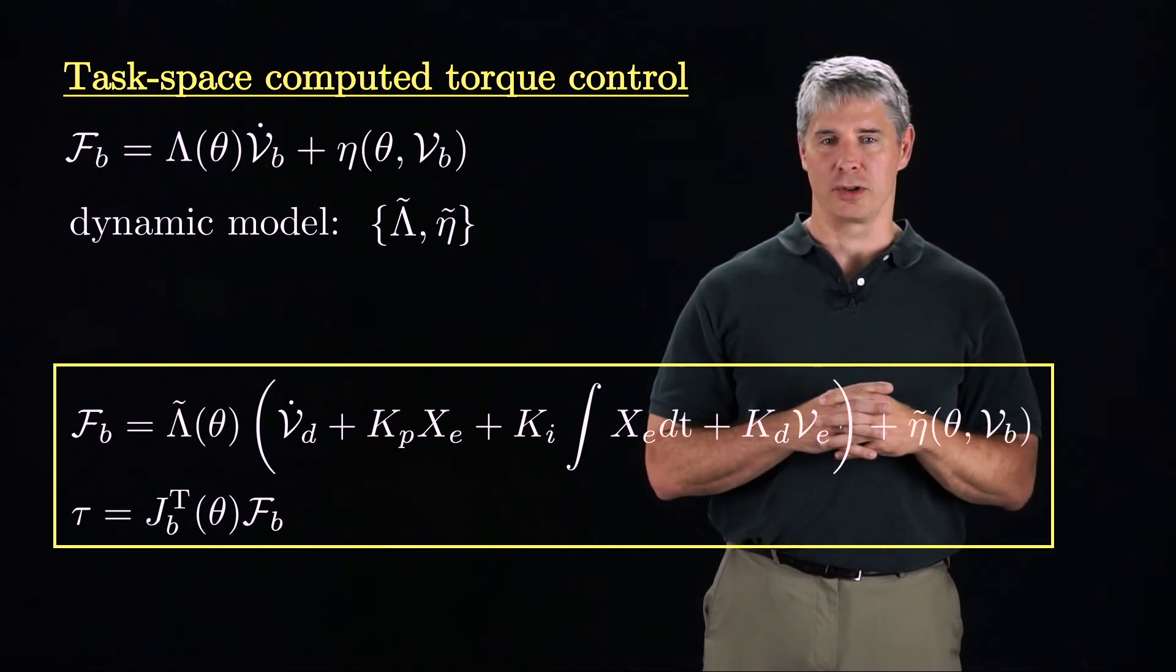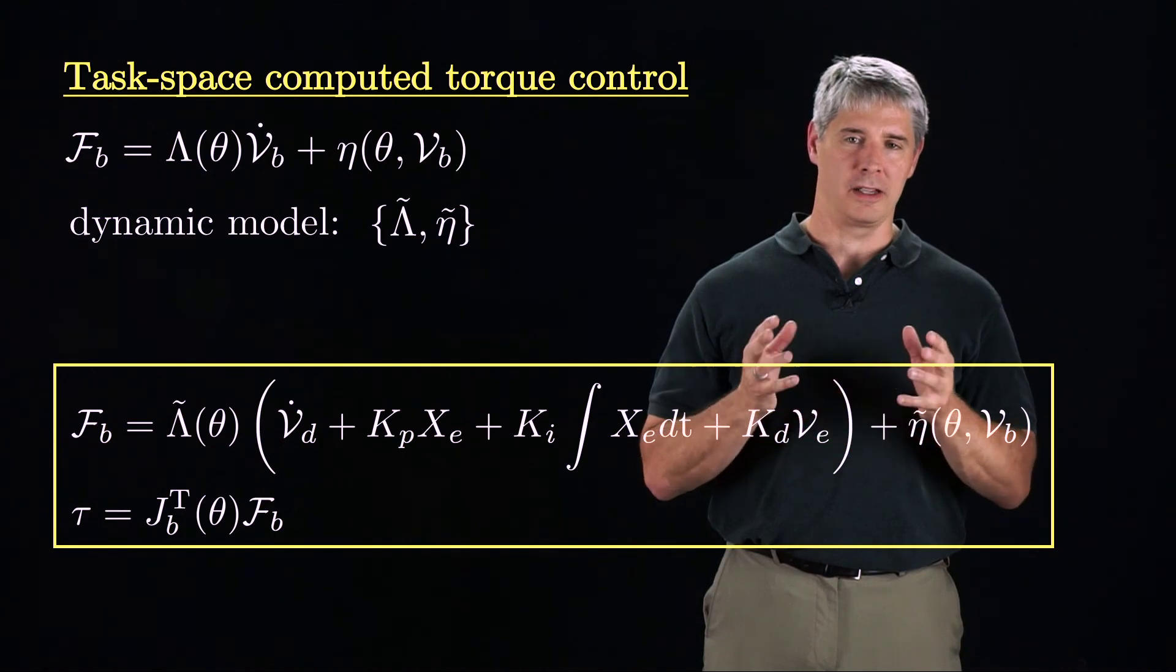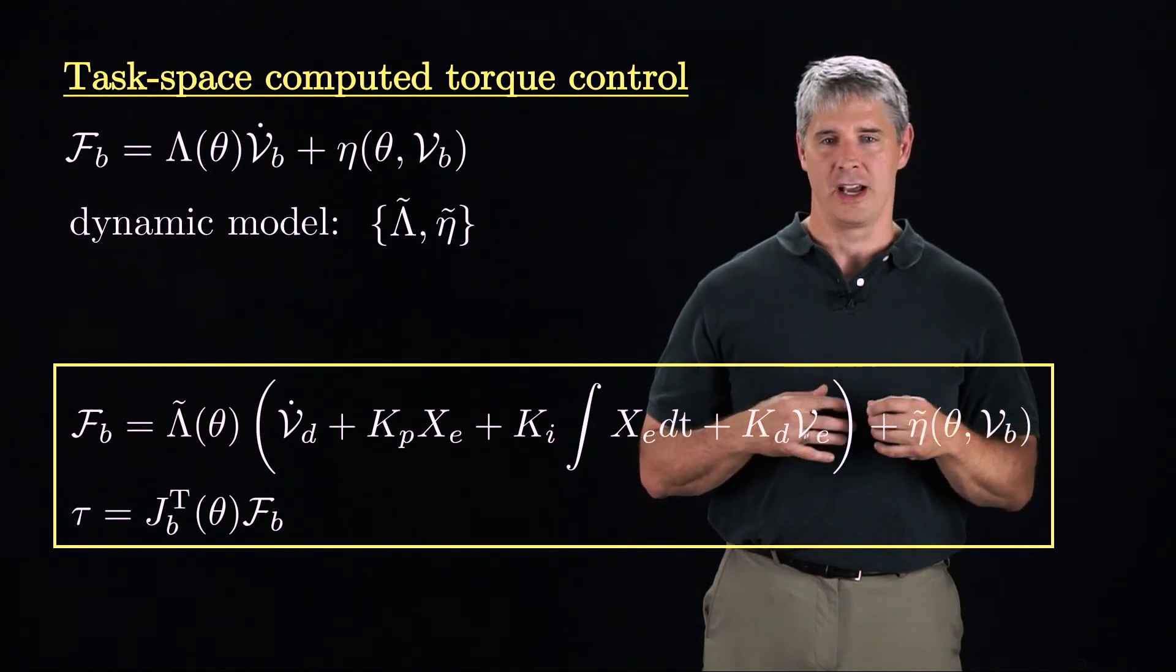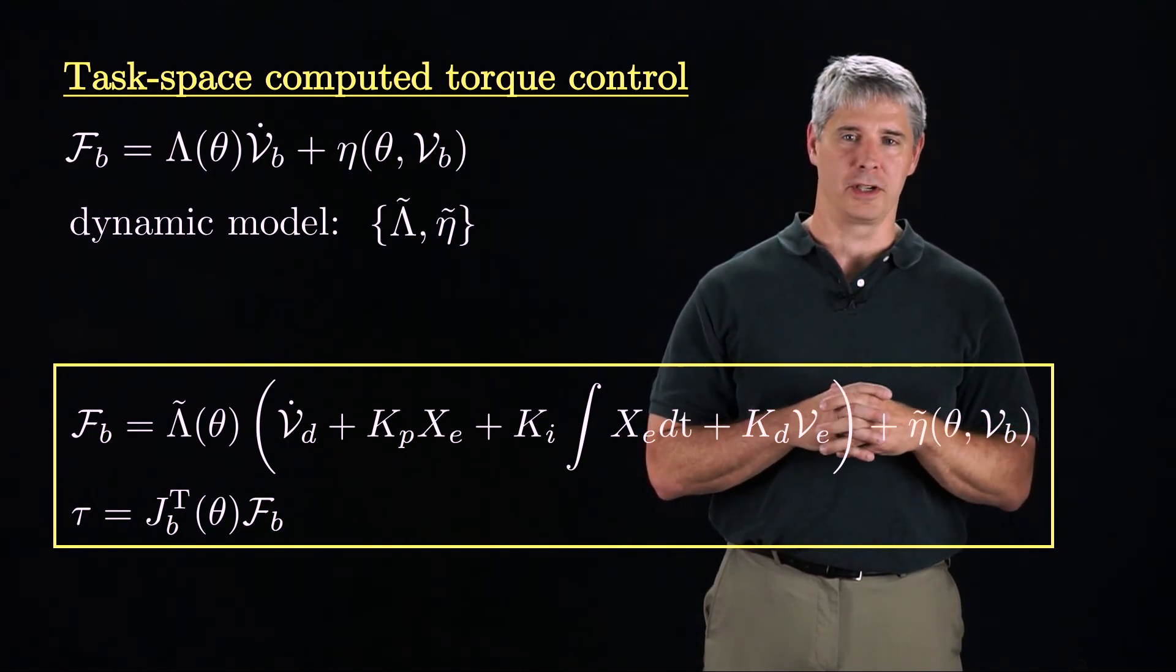Other simpler task-space control laws could be formulated, but they all involve computing an end-effector wrench and then pre-multiplying by the Jacobian transpose to get the joint forces and torques tau.